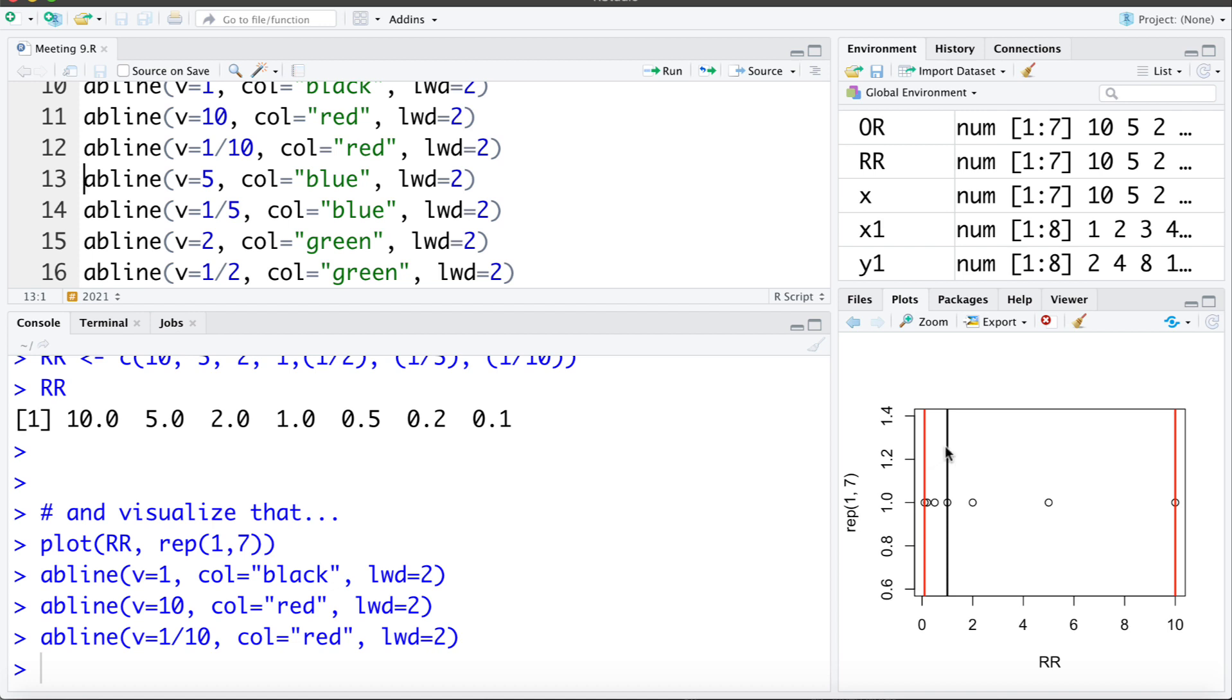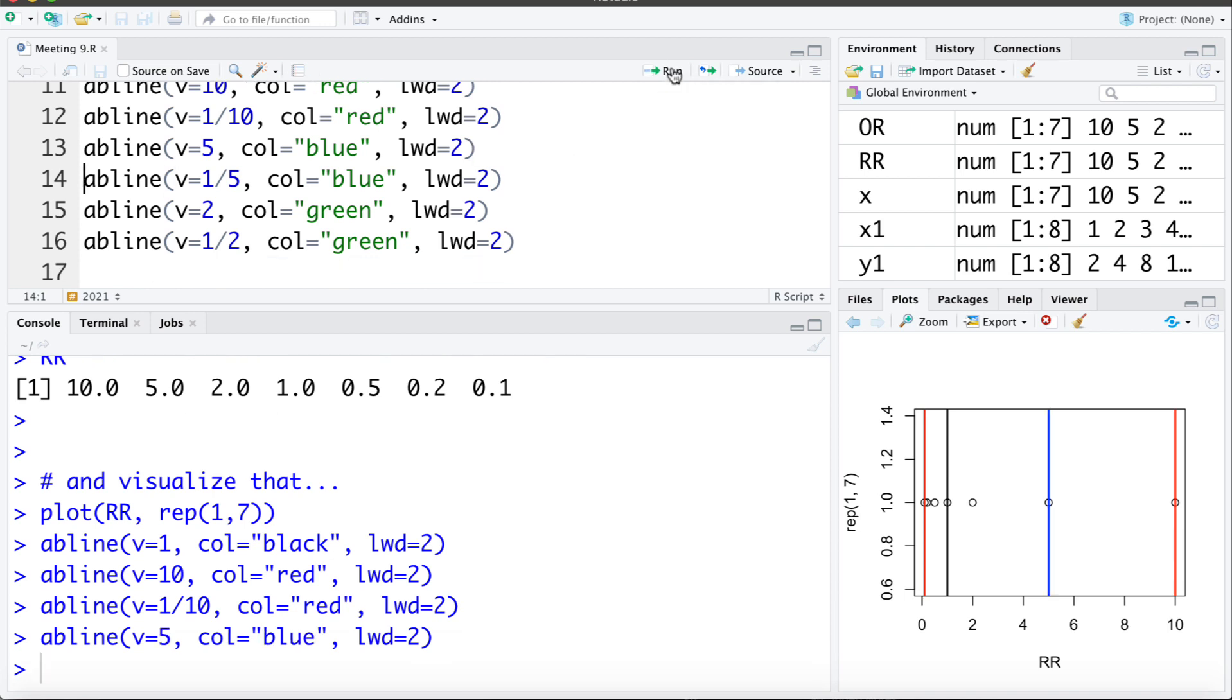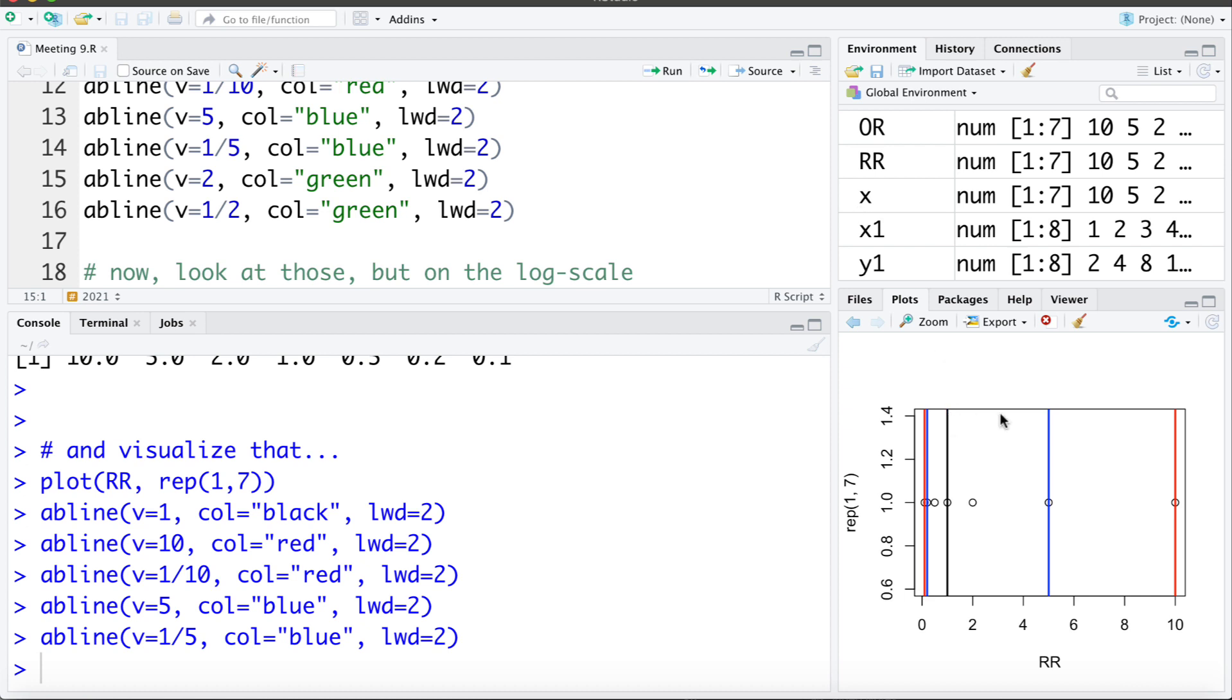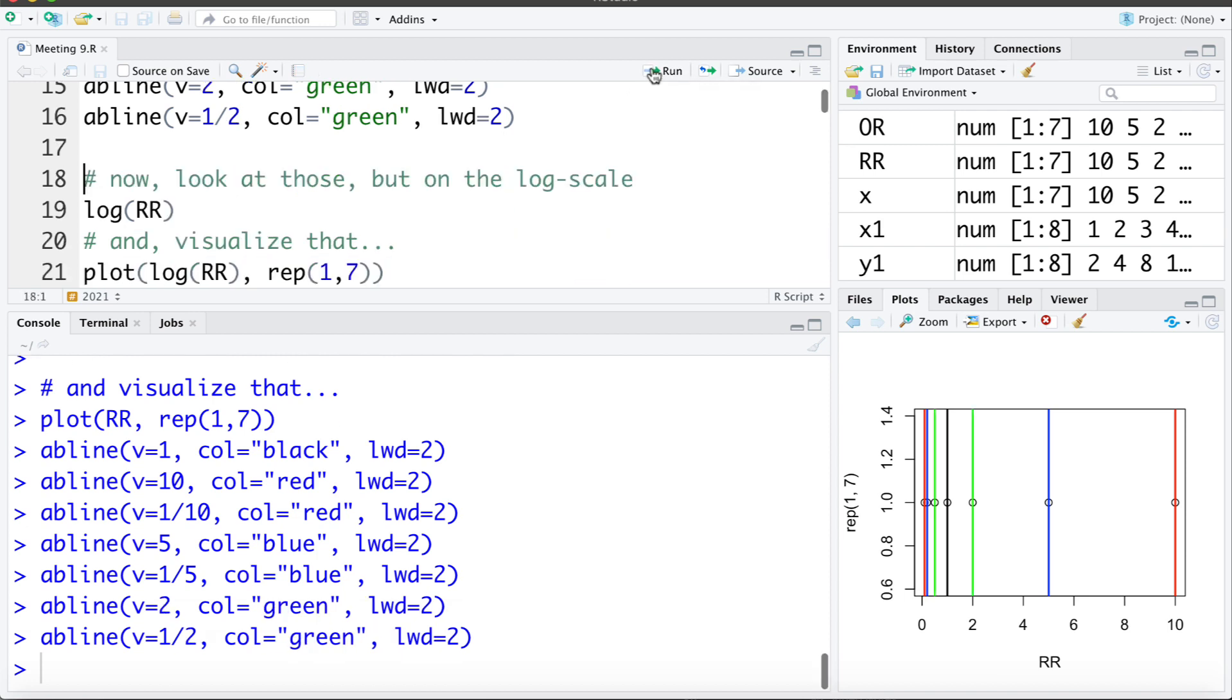This has the rate 10 times larger, this has it 10 times smaller. Let's add the lines for rate ratios of 5 and 1/5. Again, the distance from the null value up to 5 and down to 1/5 is different, though it should be the same. Here's the rate ratio of 2 and 1/2 - again the distance is not the same.